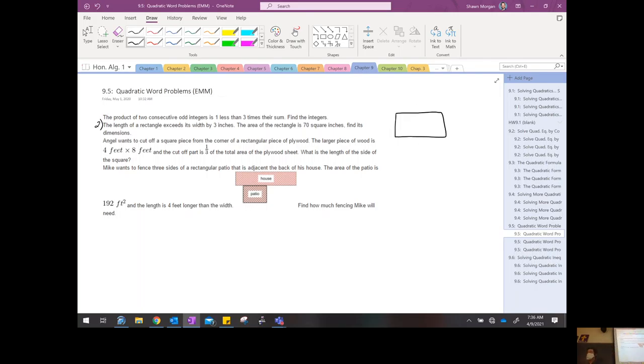So it says the length of a rectangle exceeds, what does exceeds mean? It's more than, right? So the length of a rectangle is more than the width by three inches. So let's stop right there. I'm going to draw a rectangle. So here is a rectangle. Now, if I've got an unknown width and length, the temptation will be to say let W be the width and let L be the length, right? But we don't necessarily always want to try to express things with two variables. If we can easily express it with one variable, that's much better.